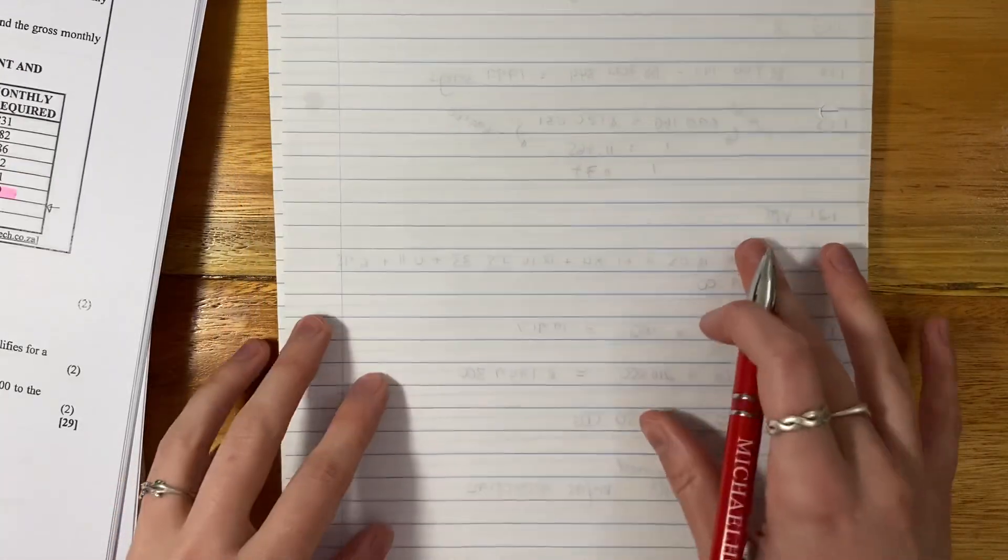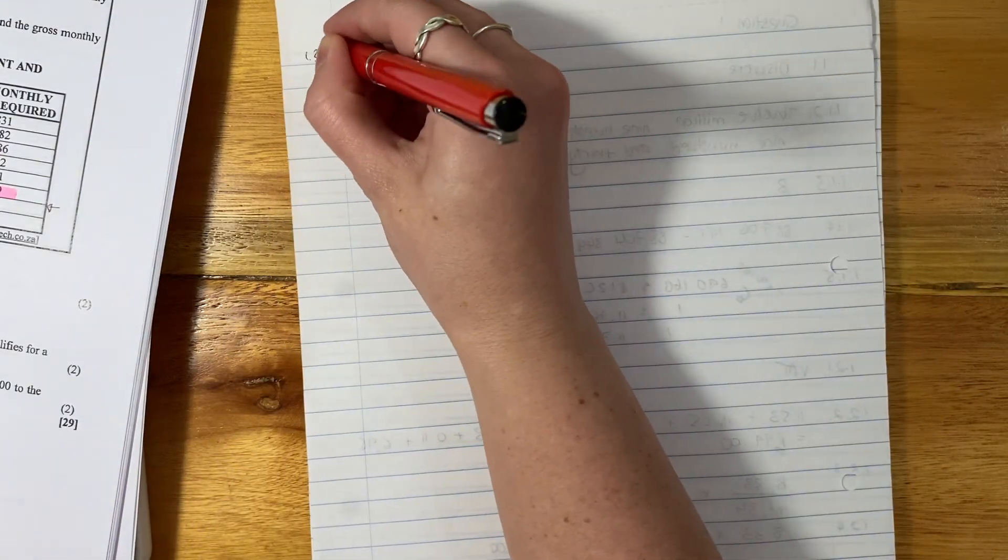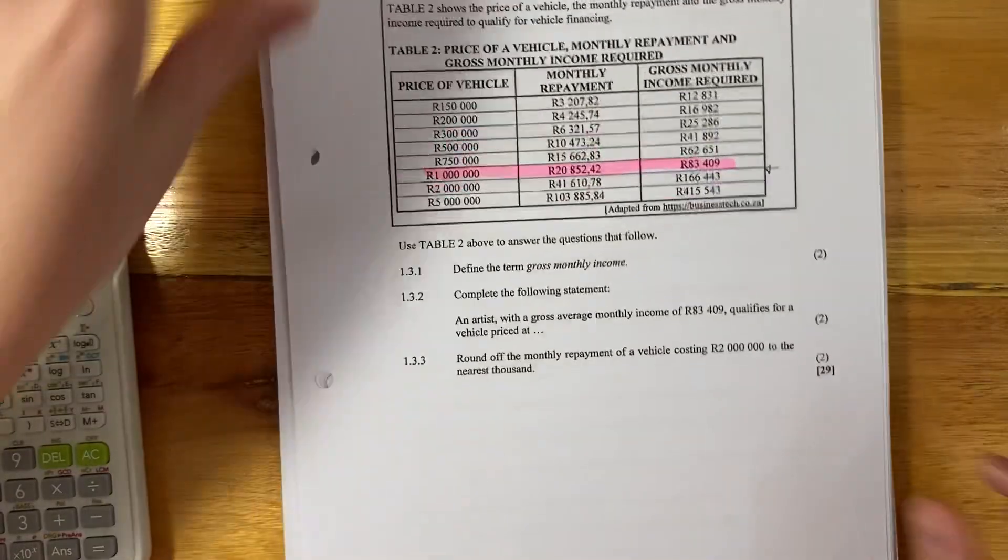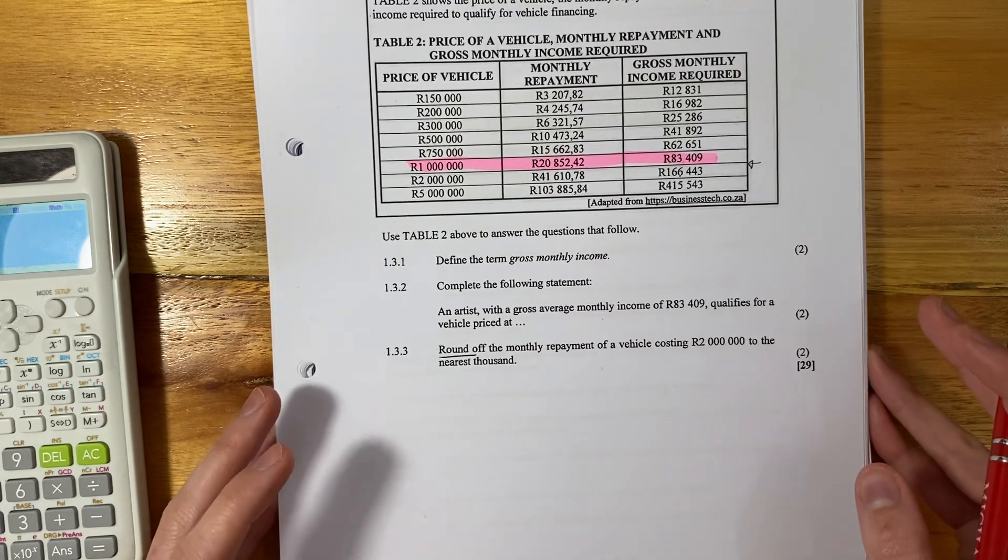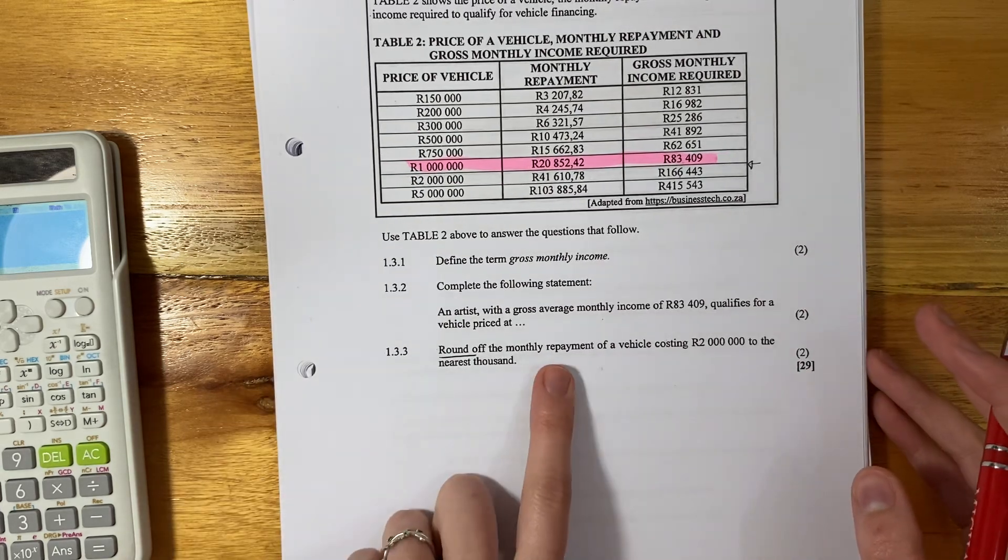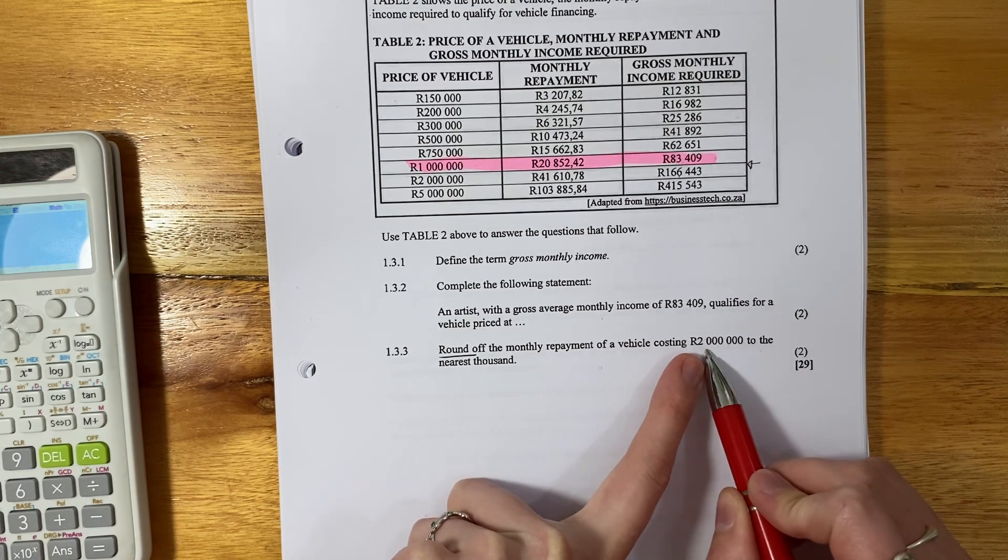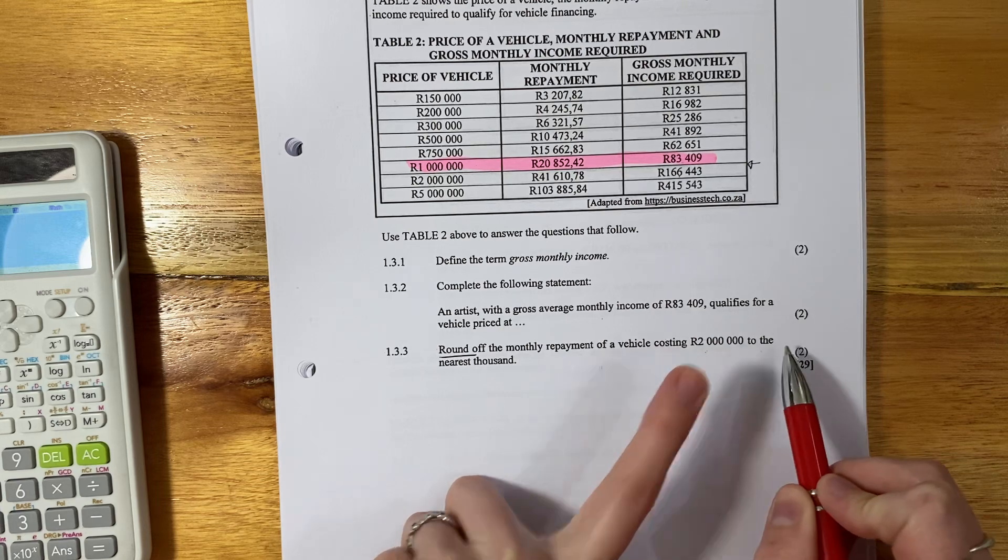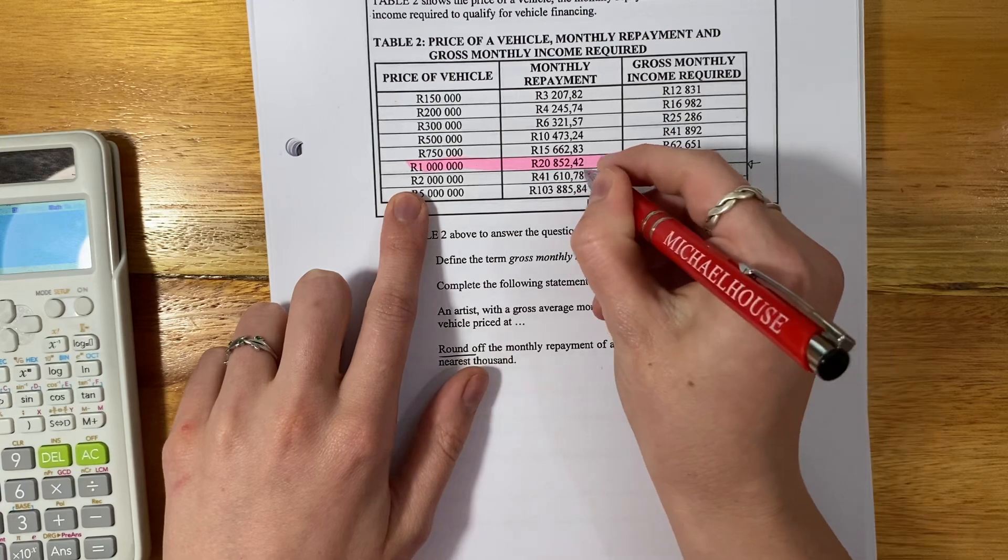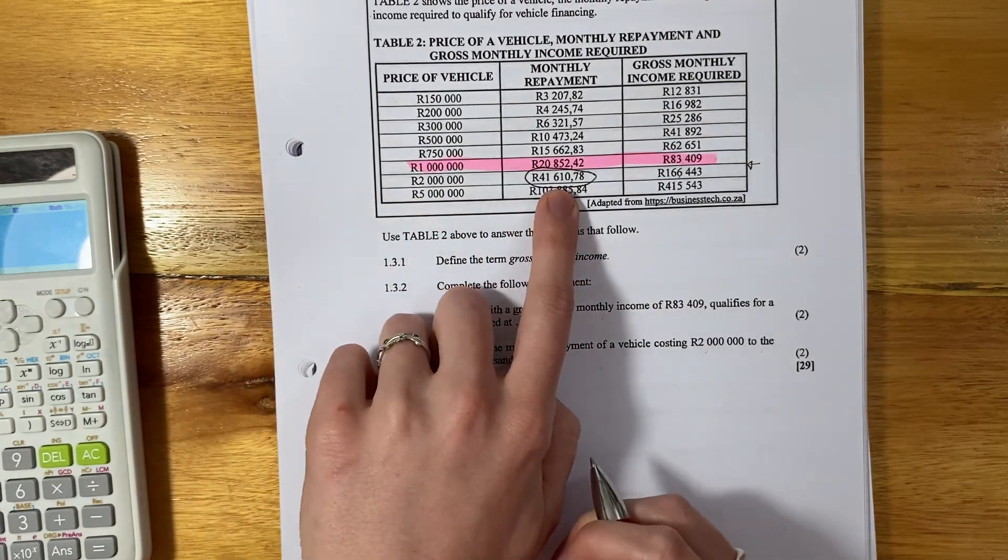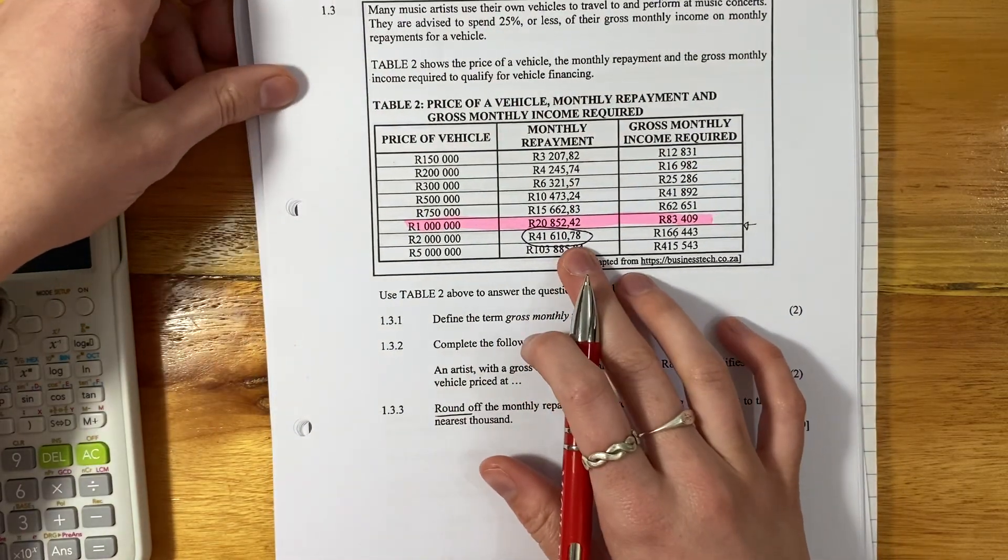Let's flip over and do our last question for this video. 1.3.3. Round off. Remember, we've done quite a bit of rounding already in this paper. So you should be getting quite comfortable with it. Round off the monthly repayment of a vehicle costing 2 million rand to the nearest thousand. So the monthly repayment for this is this amount. Because the vehicle's 2 million, the monthly repayment is 41,610 rand and 78 cents.